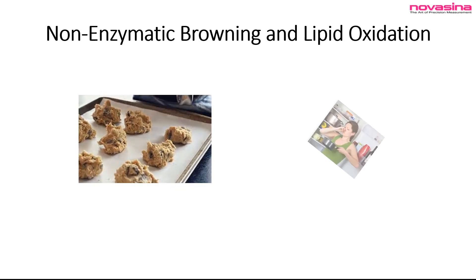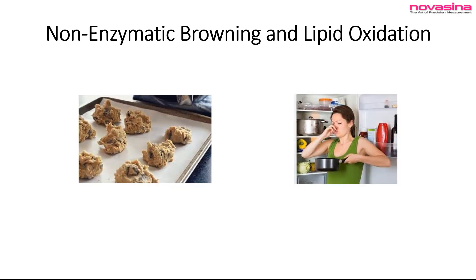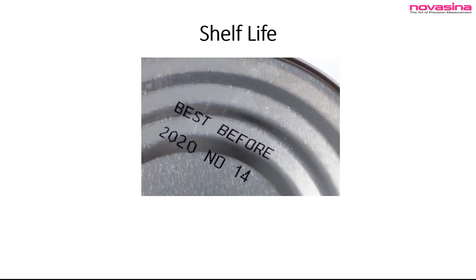Did you know that you can slow down rancidity and browning by controlling water activity? In general, as water activity increases, so does the reaction rate of most common degradative reactions. Knowing which reaction could impact your product and the rate of that reaction at a given water activity makes it possible to determine the best-by date for the product.